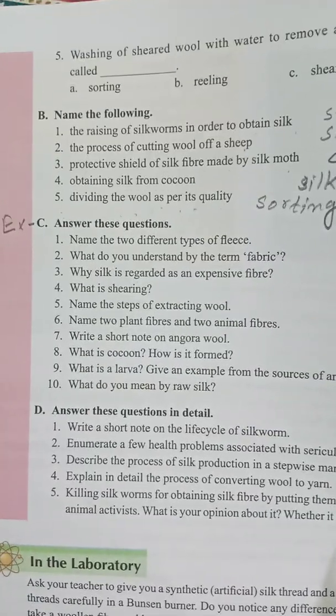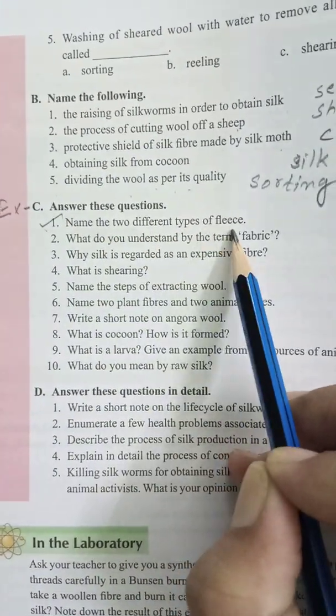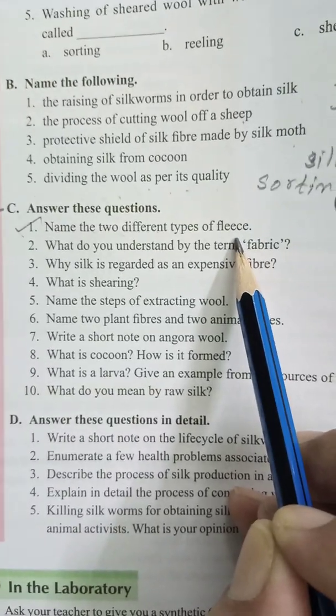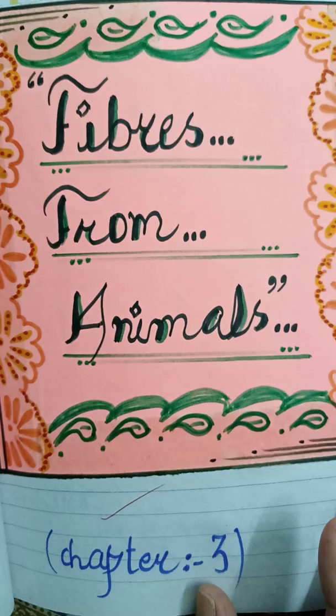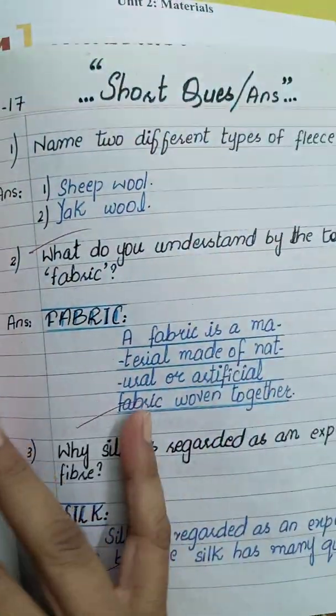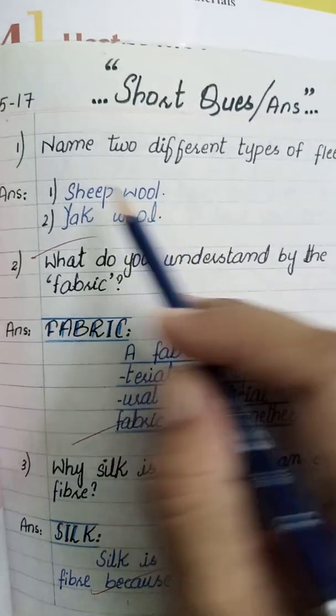Come to page number 32, here is Exercise C, which includes the short question answers of this chapter. First of all, you must make the title page of this chapter in your copy. Write a short question answer heading on the top of the page, put the date on the page, and write the question.